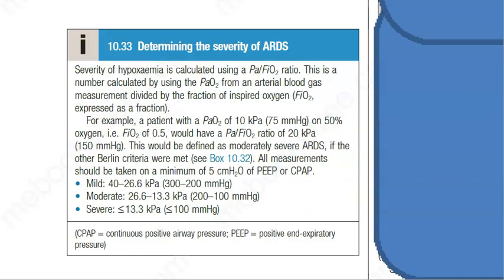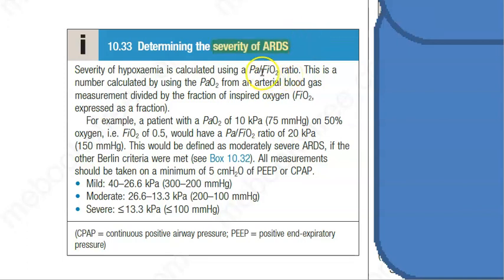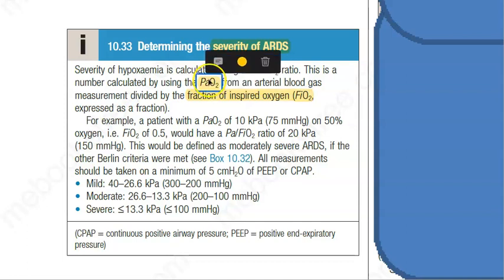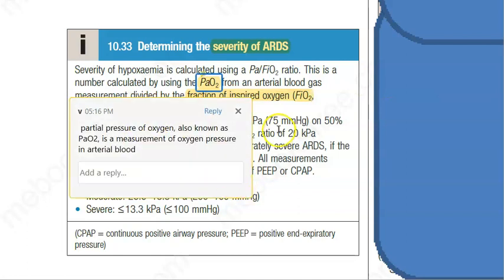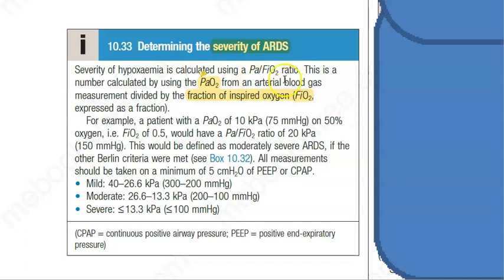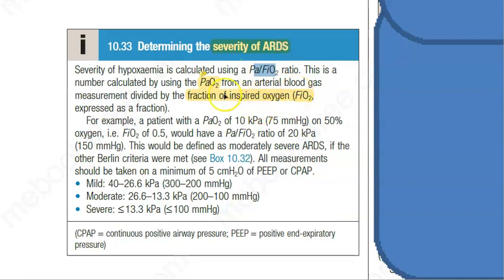To determine the severity of ARDS, you calculate the PaO2/FiO2 ratio. PaO2 is from arterial blood gas — the partial pressure of oxygen in arterial blood. FiO2 is the fraction of inspired oxygen — how much oxygen is in the air you are breathing. Basically, the ratio tells you how much oxygen the artery is able to extract from the inspired air. If it's extracting everything, the ratio would be high; if the artery cannot pick up enough oxygen, the ratio is very low.